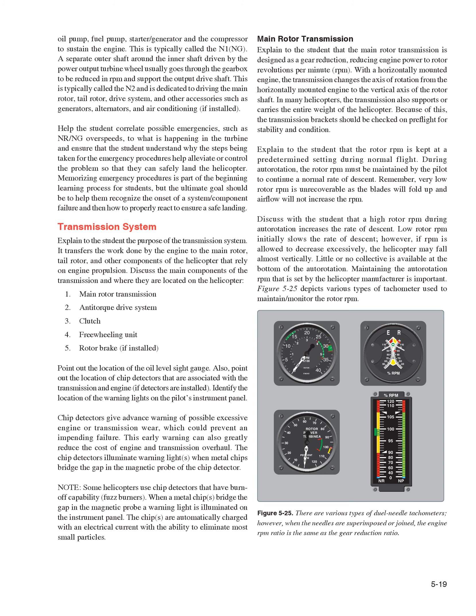Explain to the student the purpose of the transmission system. It transfers the work done by the engine to the main rotor, tail rotor, and other components of the helicopter that rely on engine propulsion. The main components of the transmission are: 1. Main rotor transmission. 2. Anti-torque drive system. 3. Clutch. 4. Freewheeling unit. 5. Rotor brake (if installed). Point out the location of the oil level sight gauge, chip detectors associated with the transmission and engine, and the warning lights on the pilot's instrument panel. Chip detectors give advance warning of possible excessive engine or transmission wear, which could prevent an impending failure. The chip detectors illuminate warning lights when metal chips bridge the gap in the magnetic probe. Some helicopters use chip detectors that have burn-off capability (fuzz burners), which automatically charge chips with an electrical current to eliminate most small particles.